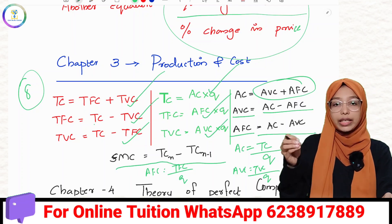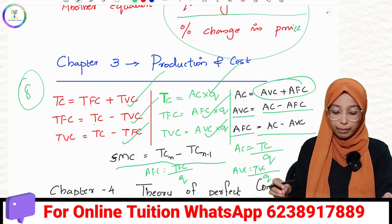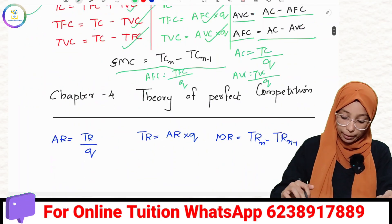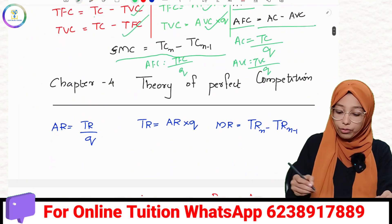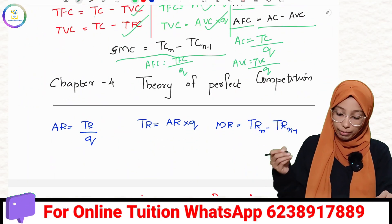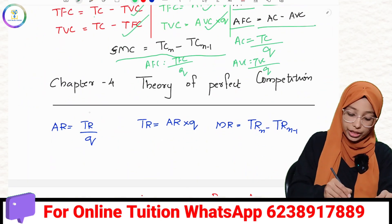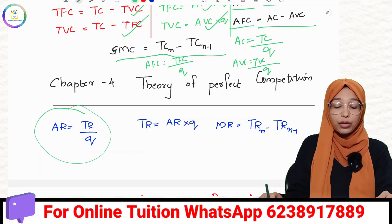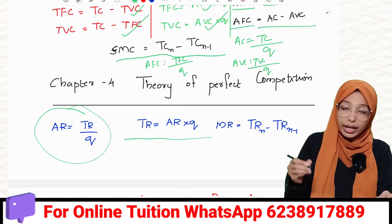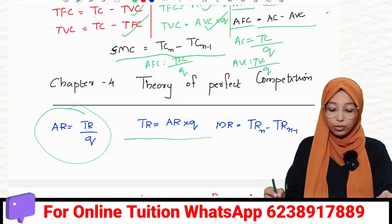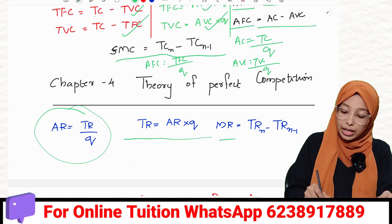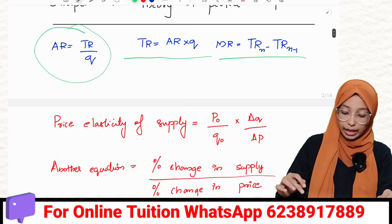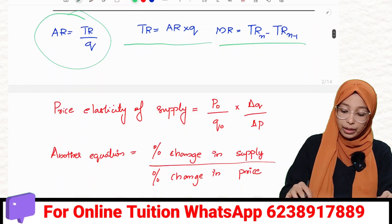Chapter 4: Theory of Perfect Competition. For a firm under perfect competition: Average Revenue equals Total Revenue divided by Quantity, Total Revenue equals Average Revenue multiplied by Quantity, and Marginal Revenue equals Total Revenue N minus Total Revenue N-1.